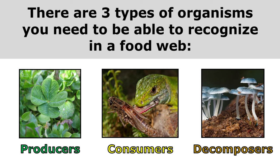There are three types of organisms you need to be able to recognize in a food web: producers, consumers, and decomposers.